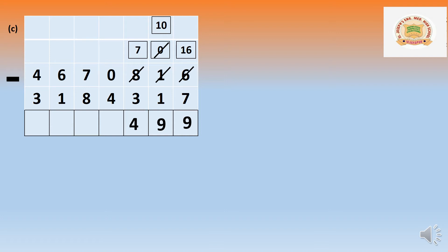In the thousands place, 0 thousand cannot minus 4 thousand. We borrow from the ten-thousands. Seventy thousand gives 10 thousand, becoming 60 thousand. After taking, it becomes 10 thousand. In two-digit form: 10 minus 4 equals 6 — so 6 thousand.